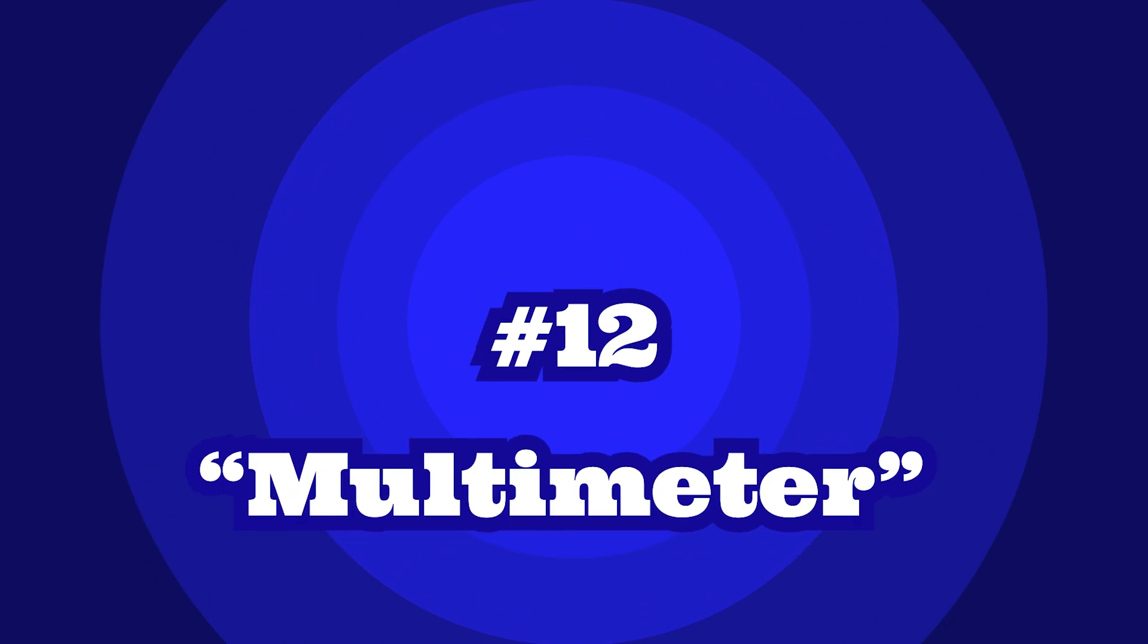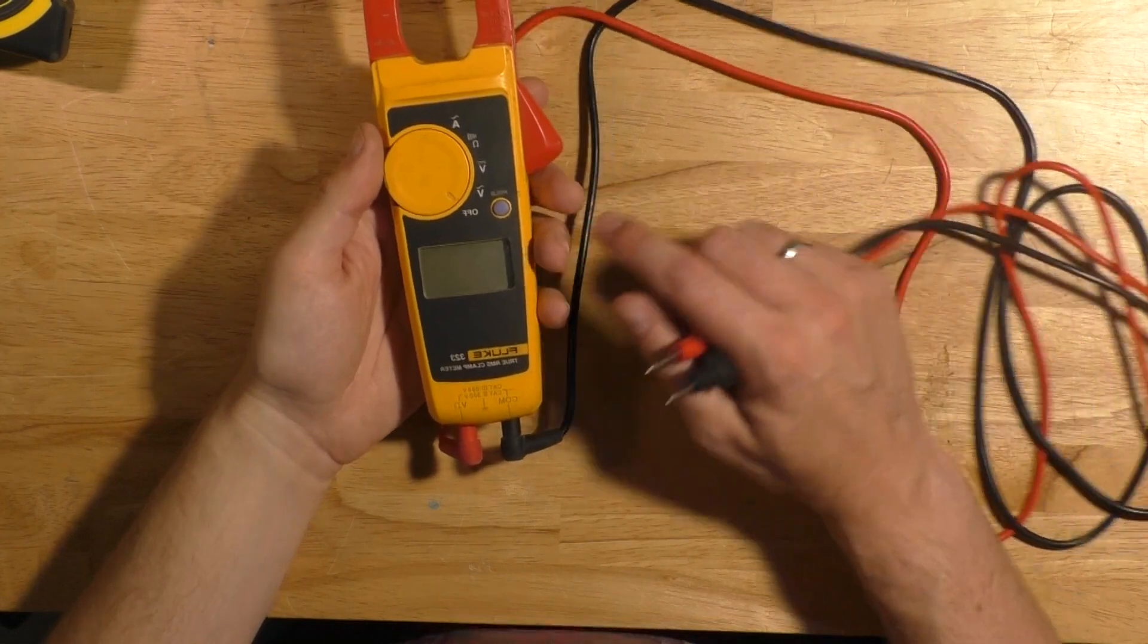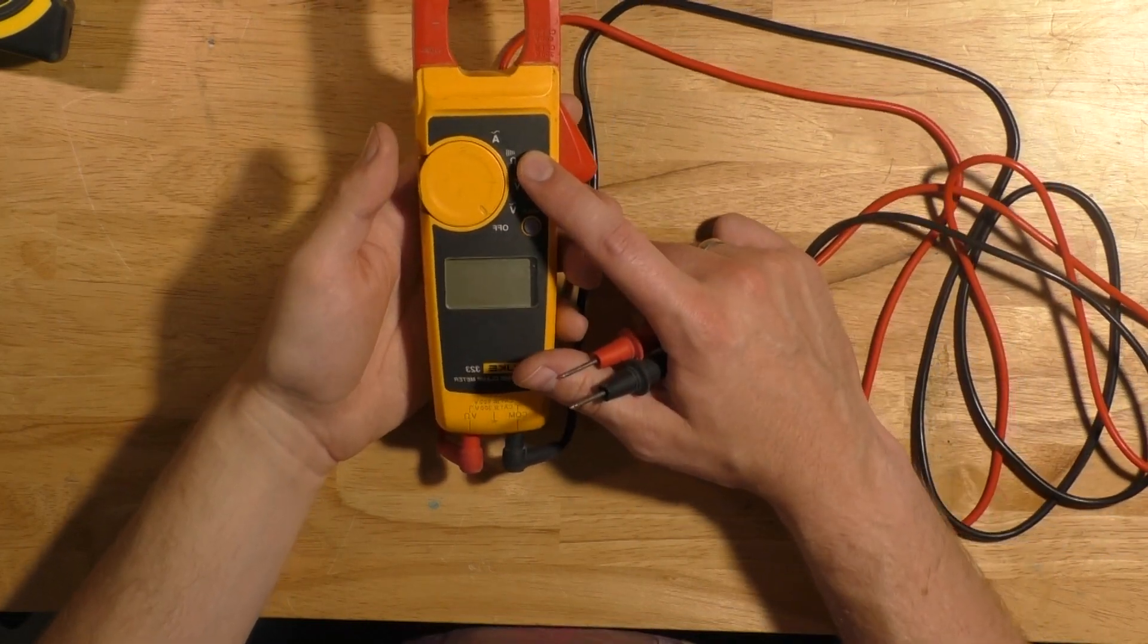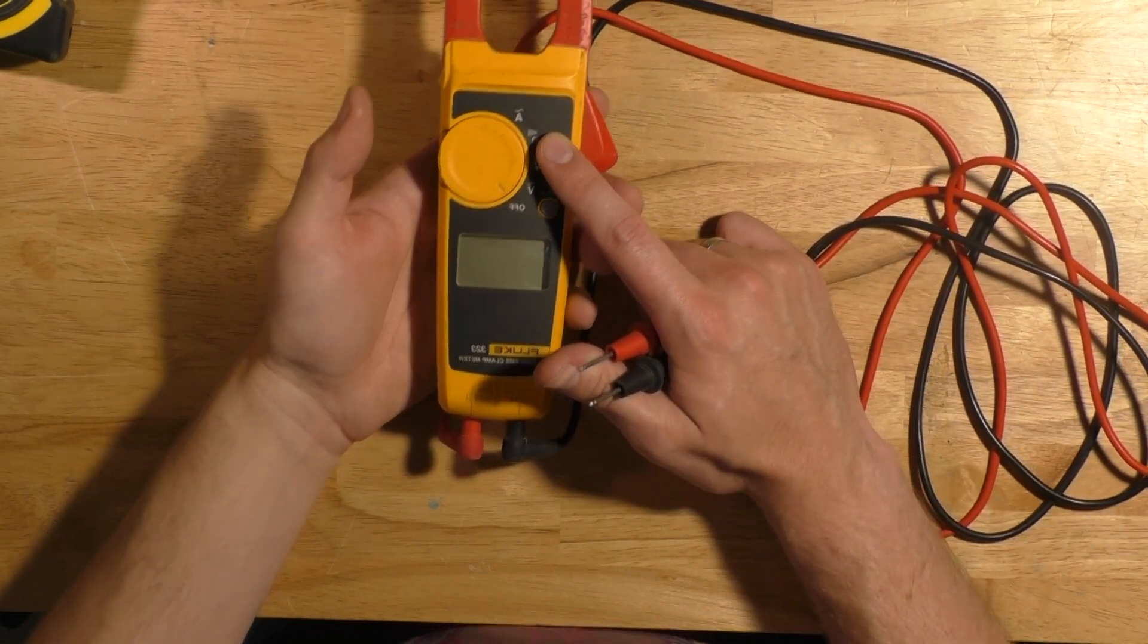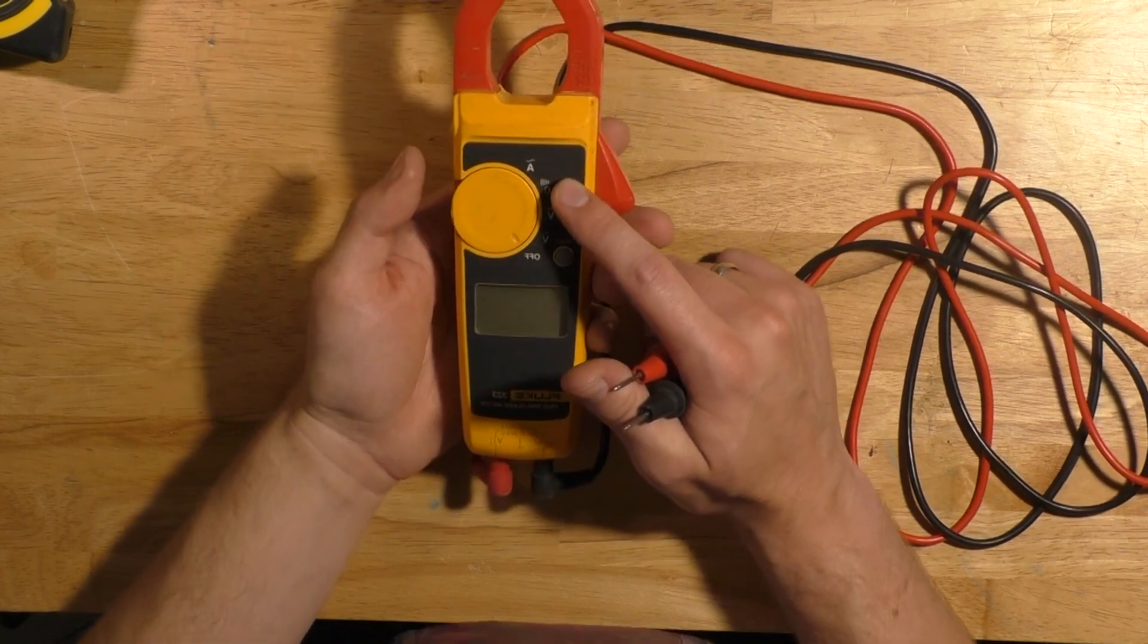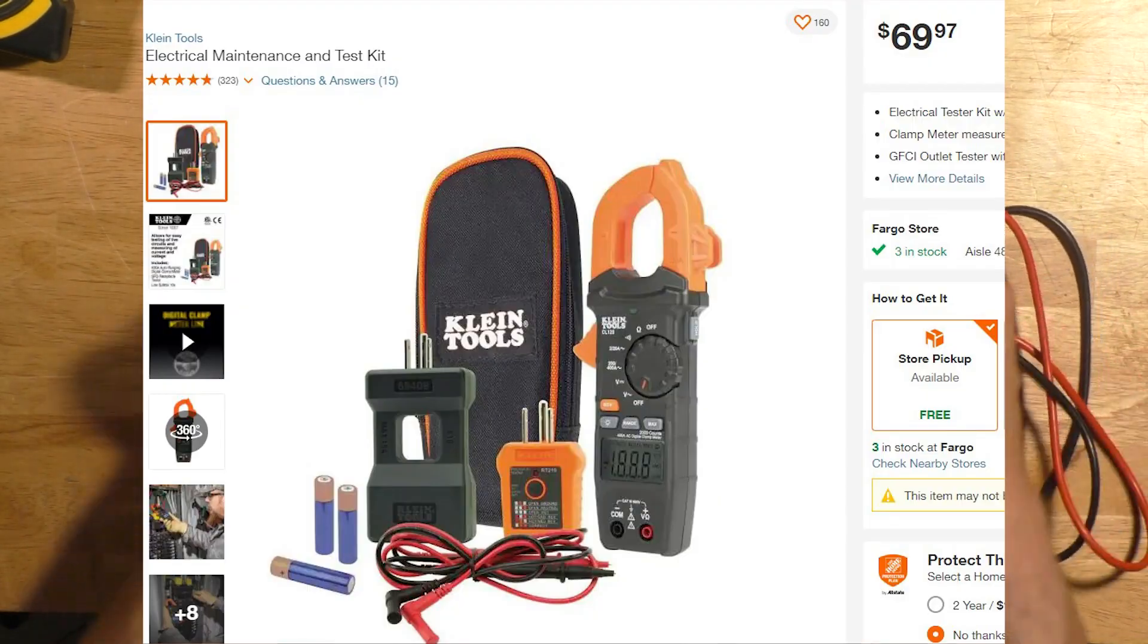Coming in at number 12 is a multimeter. You will be using a multimeter to check current and voltage and continuity on a circuit. A meter is typically considered a big expense but it doesn't have to be.